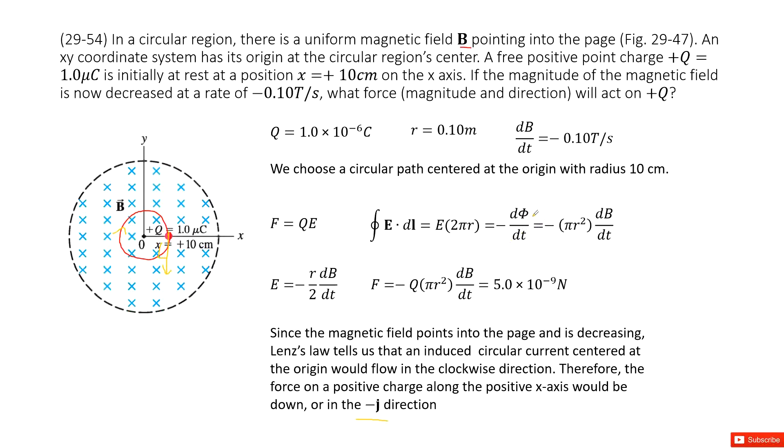Now we can see the Φ is magnetic field times the cross-sectional area, so B times πr². So it looks like only B changes with time. So we can write it as dB/dt. From this equation, you can see these two parts, you can write down the electric field as negative r over 2 dB/dt.